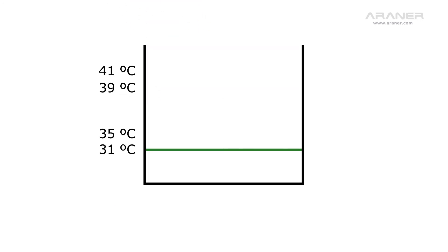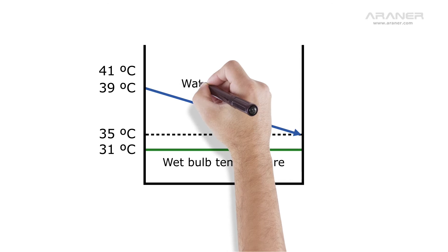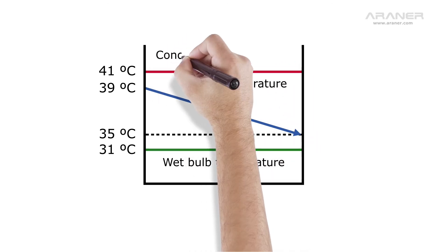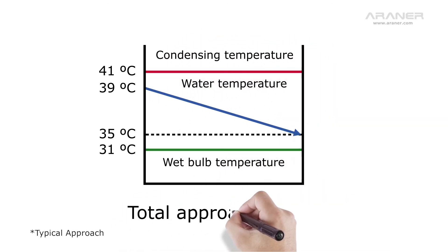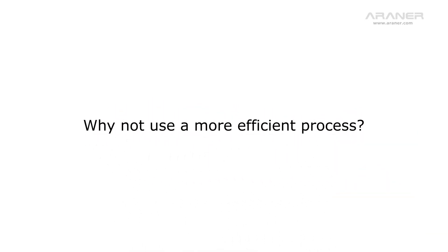If the ambient wet bulb temperature is 31 degrees Celsius and we are using a cooling tower with an approach of 4, then our cooling water will be 35. This water will be heated up to 39 in the condenser, so the condensing temperature has to be 41, ending up in a total approach of 10.